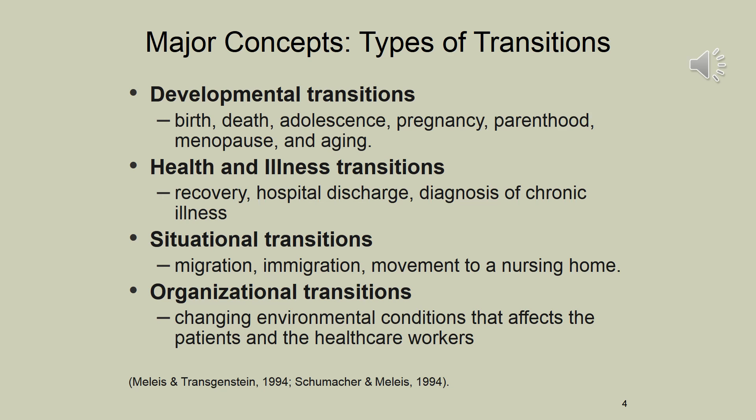She defines several types of transitions in her major concepts. Developmental transitions include birth, death, adolescence, pregnancy, menopause, and aging. Health and illness transitions could be something like a diagnosis of a chronic illness, a hospital admission or discharge, or recovery. Situational transitions that influence health include migration, immigration, and movement to a nursing home. And organizational transitions involve changing environmental conditions that affect both patients and healthcare workers.